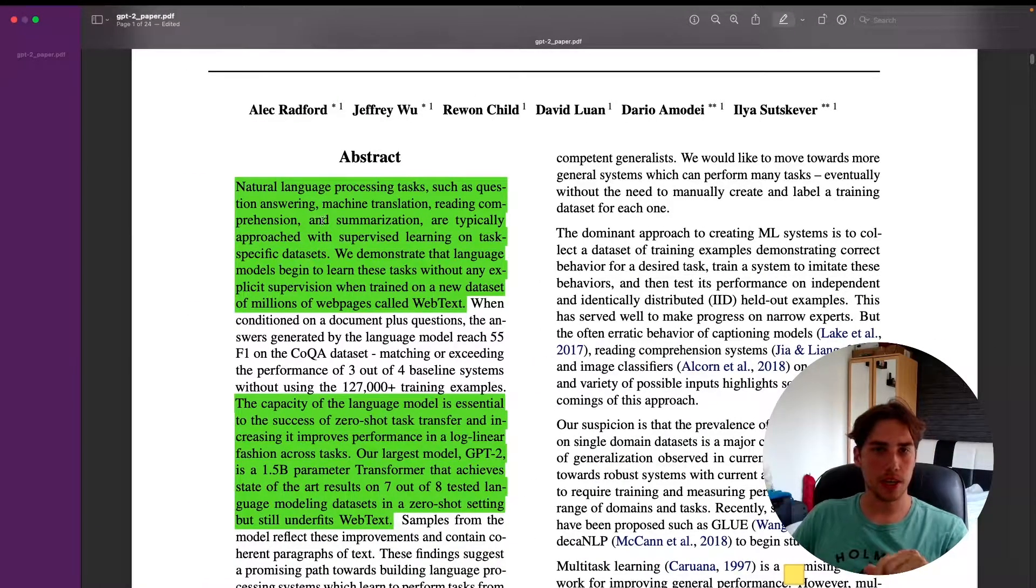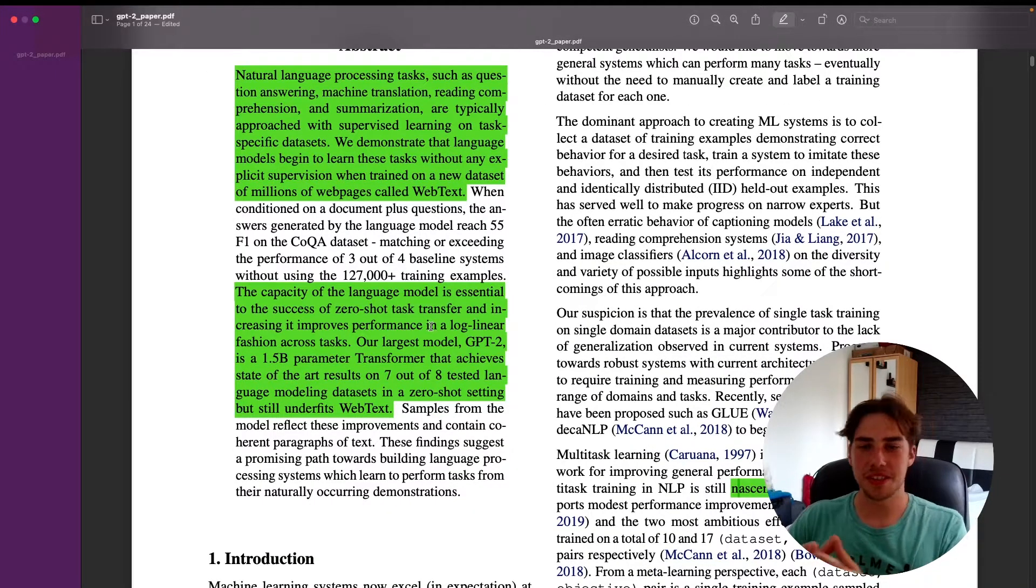Let's look at the abstract. They say that natural language processing tasks such as question answering, machine translation, reading comprehension, and summarization are typically approached with supervised learning on task-specific datasets. We demonstrate that language models begin to learn these tasks without explicit supervision when trained on a new dataset of millions of web pages called WebText.